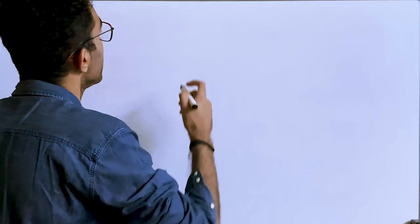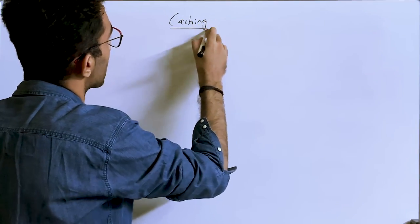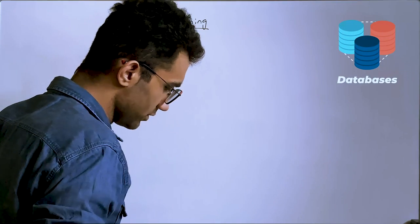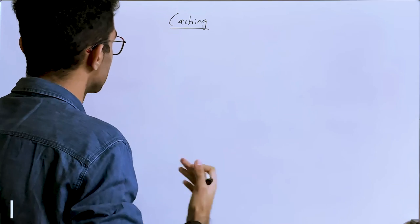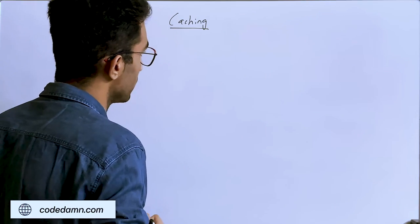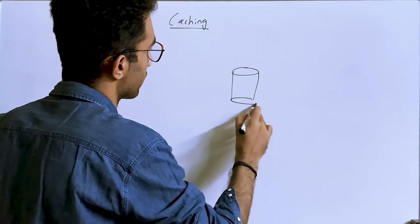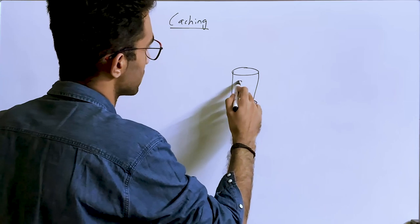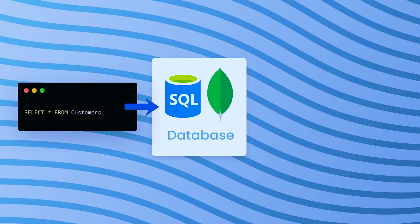Caching is one of the most important things to learn as a backend developer. In this video, I'll focus on caching from the angle of databases, since that is one of the most commonly used areas of caching. You can cache all sorts of computations, but database lookups are very popular.